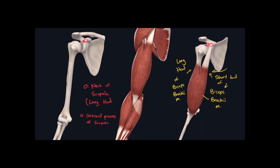Now that we've identified both origins for the long and short head of the biceps brachii muscle, we can discuss the insertion. Looking at the right image, the insertion point is only found on the radius. The bony landmark for this region is called the radial tuberosity, and that's the insertion point for the biceps brachii muscle.